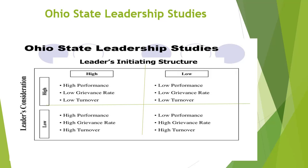Now the second quadrant: where leader consideration — people orientation — is high, but production focus is low. In this case, low performance and low production result. However, low grievances rate persists because people are happy and the manager is taking care of them, and low turnover occurs because people don't want to leave companies that care for them. But the leader must explain to the owner why production is low.